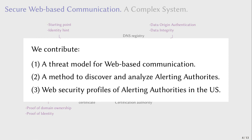In our work, our contribution can be summarized in three points. First, we define a threat model for web-based communication. We also introduce a method to discover and analyze alerting authorities. We put these two steps together to analyze actual alerting authorities and draw a holistic picture of their security profiles in terms of what we call assurance profiles. But first, we need to define what we mean by secure.